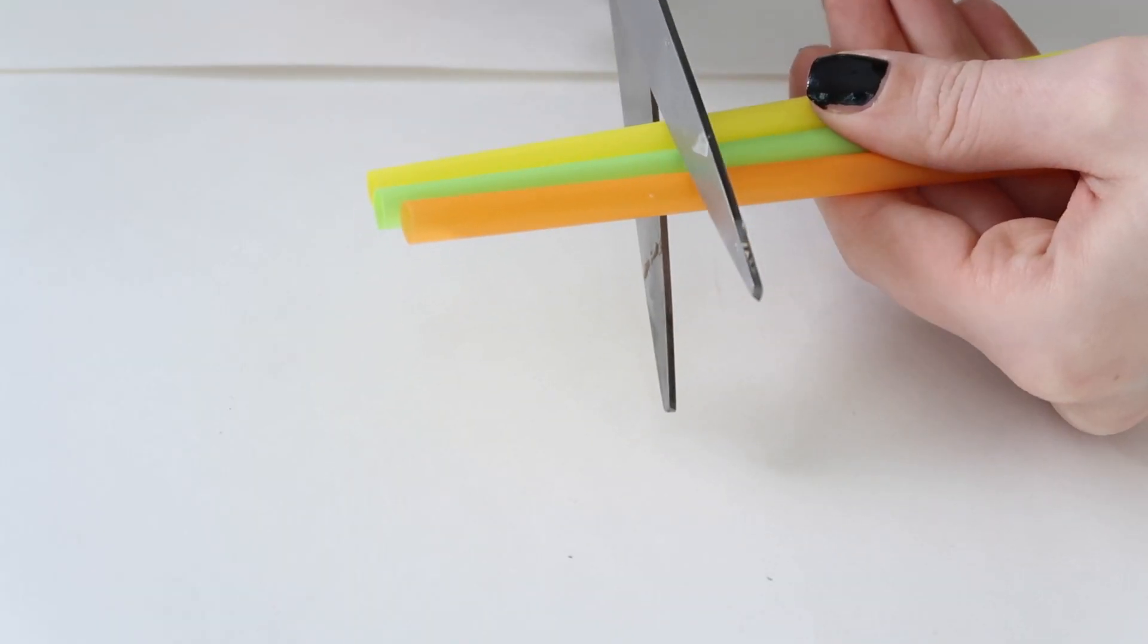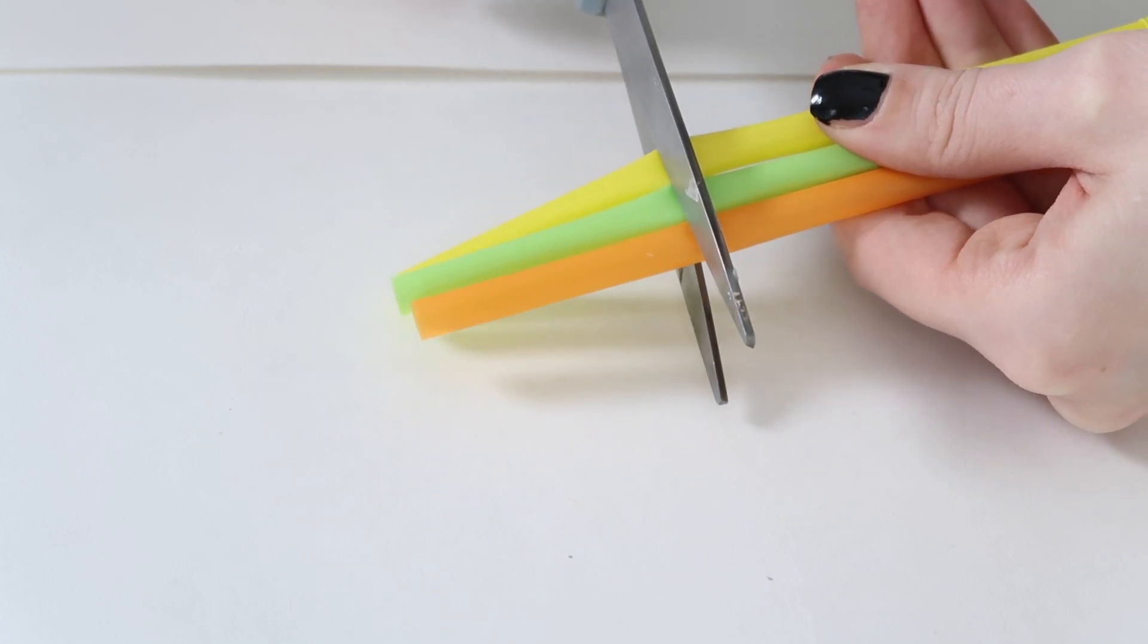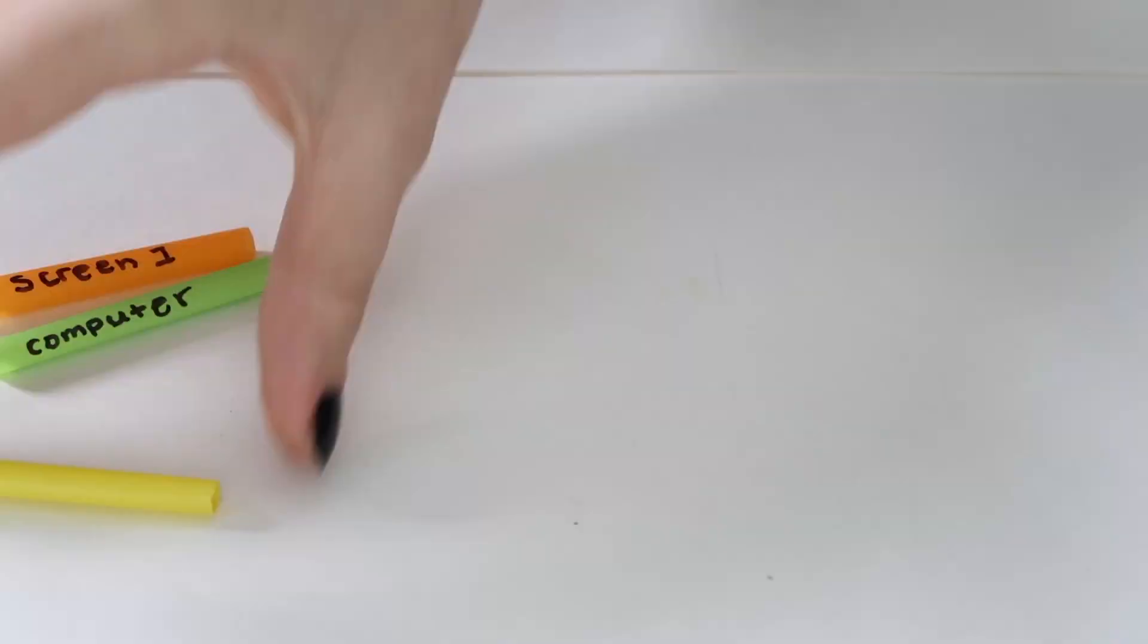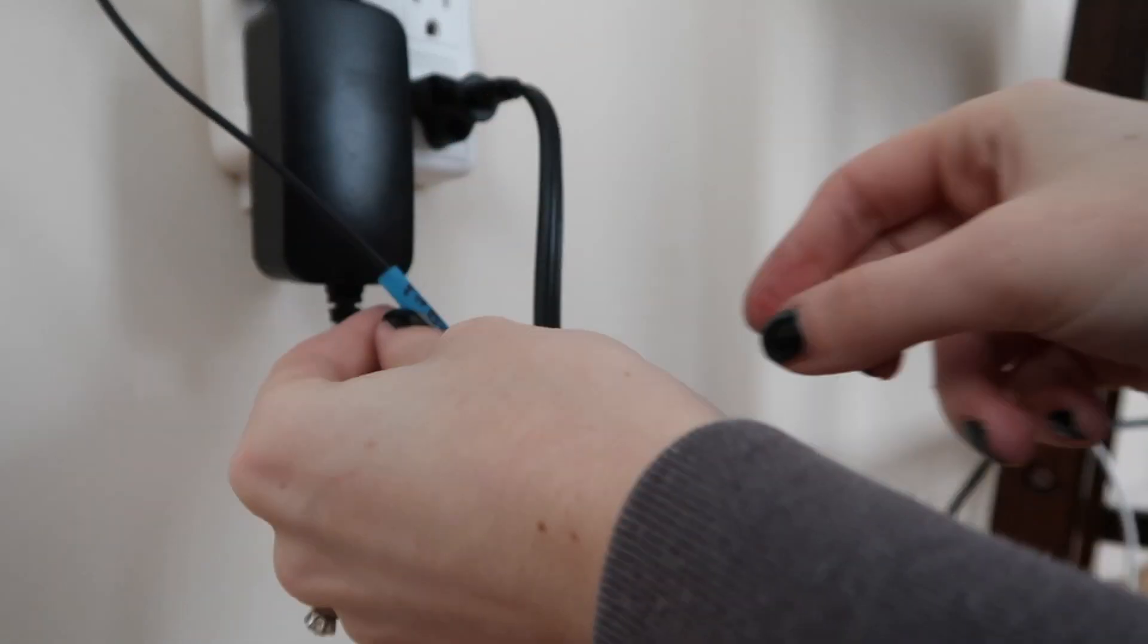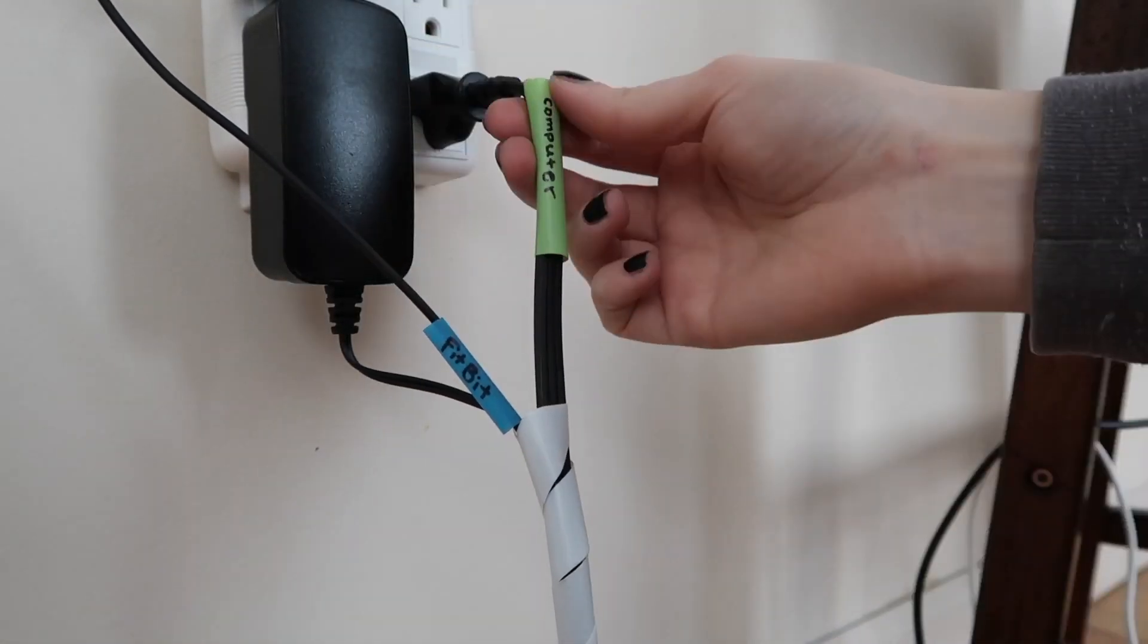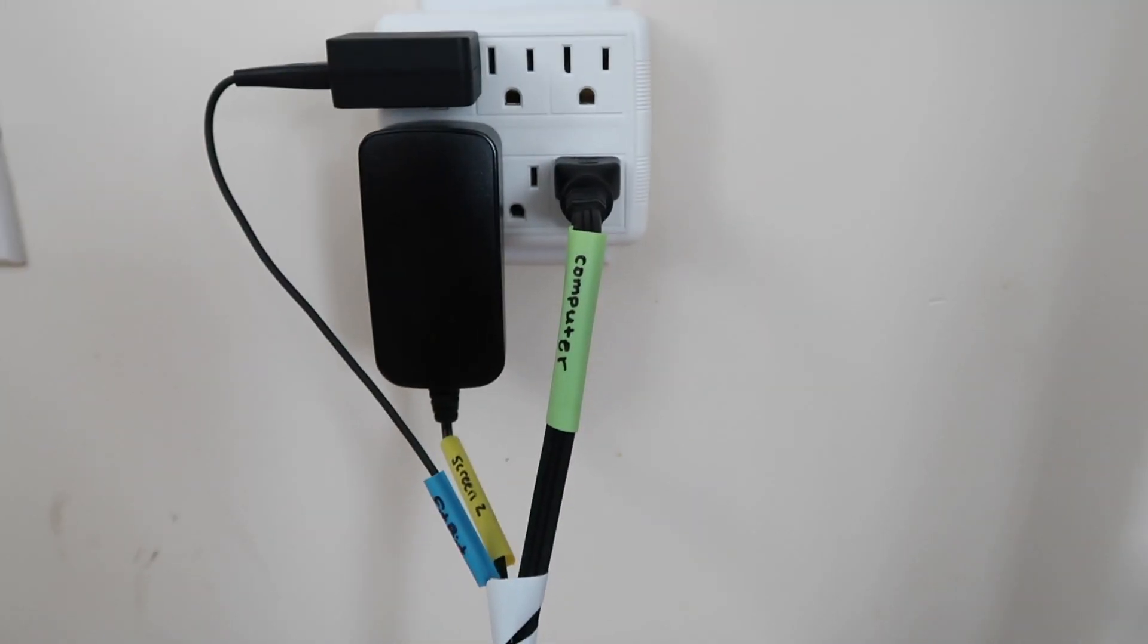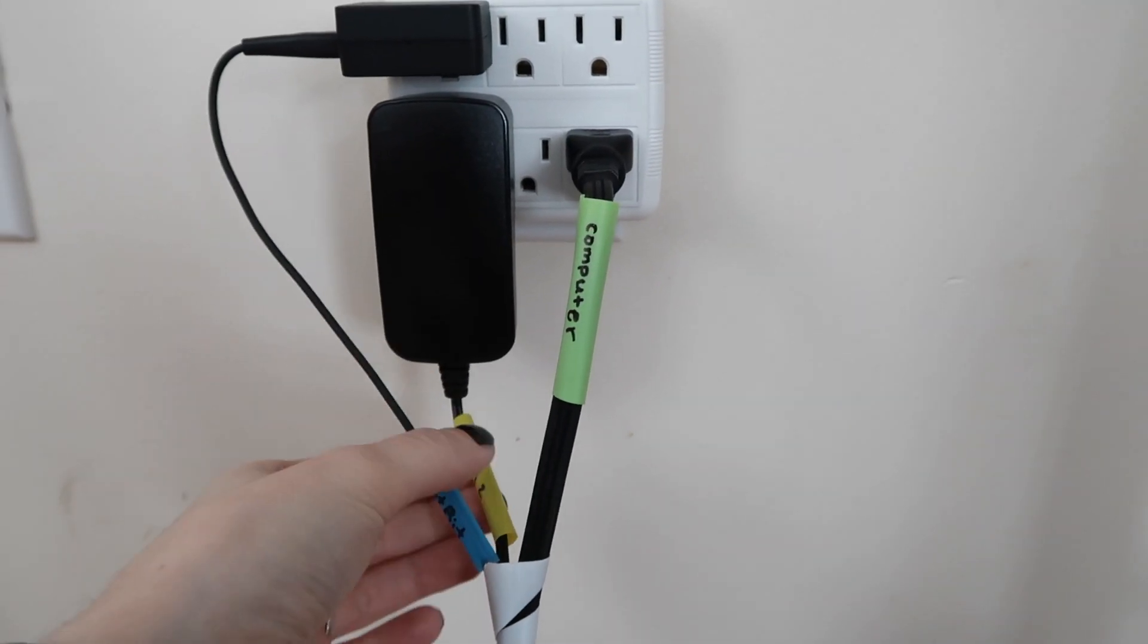Now as far as knowing which wire is which wire, you can just cut small lengths of straw. And with a permanent marker, just write whatever the item that wire relates to is, cut a slit up the center, pop it onto the wire near the plug, the place where you usually don't know what this wire goes to, and then at a quick glance, you can always see which wire goes to which item.